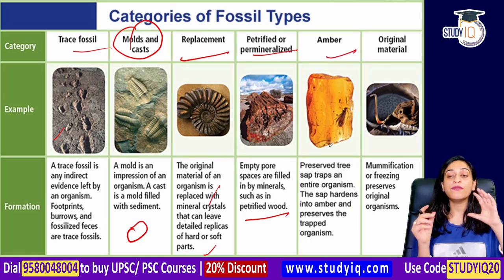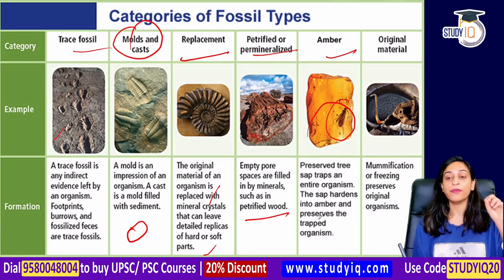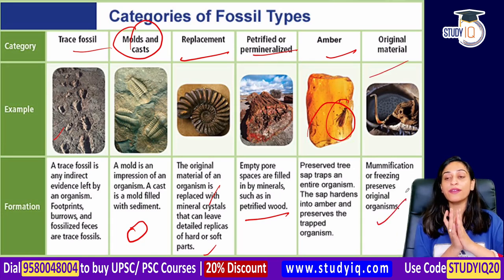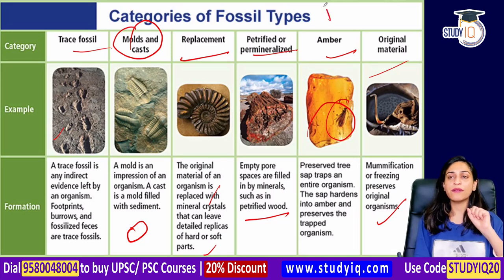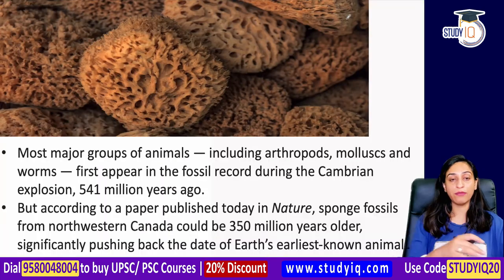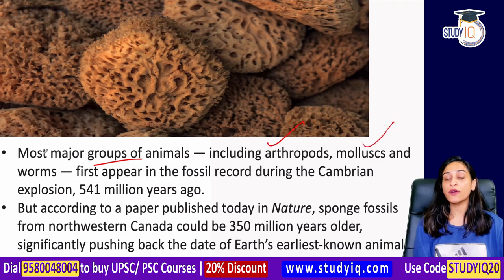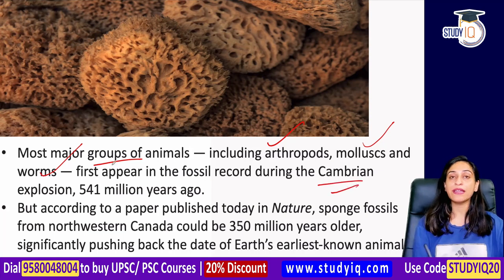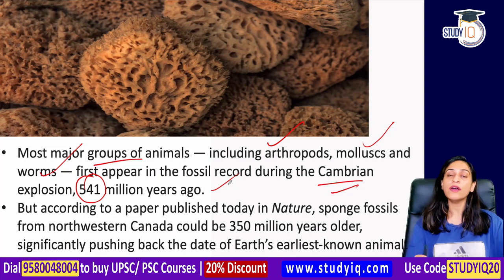Amber preserves entire organisms trapped in ancient tree sap. Mummified and frozen organisms also preserve original material. Major animal groups like arthropods, mollusks, and worms have fossil records in the Cambrian — around 540 to 541 million years ago — but now this paper published in Nature changes that picture.